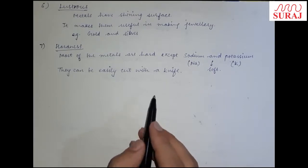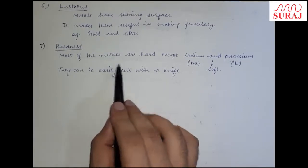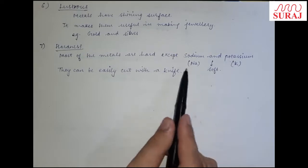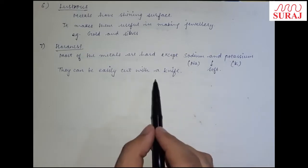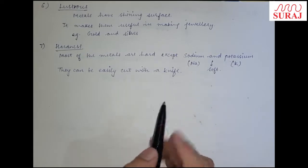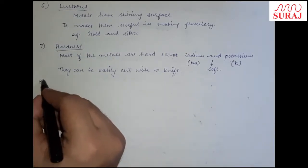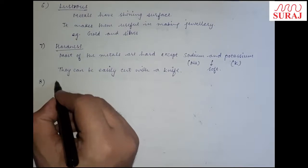So in hardness, all metals are hard except sodium and potassium — यह दोनों soft होते हैं, easily knife से cut कर सकते हैं।